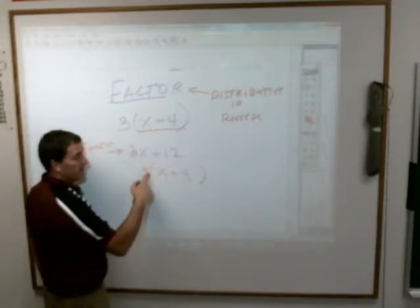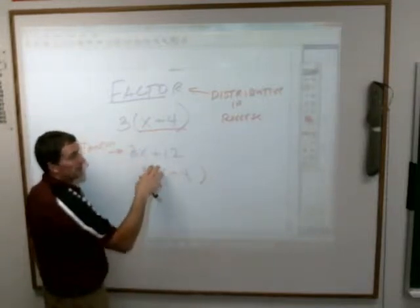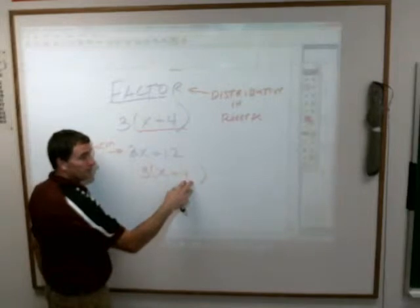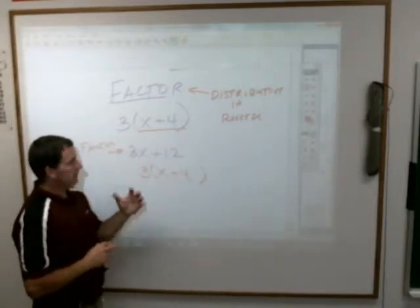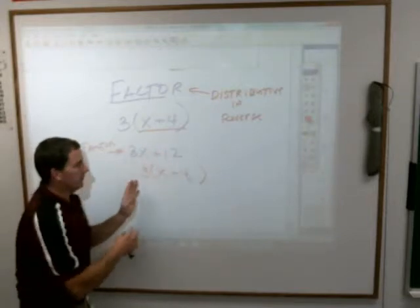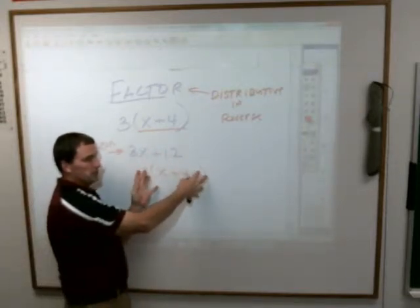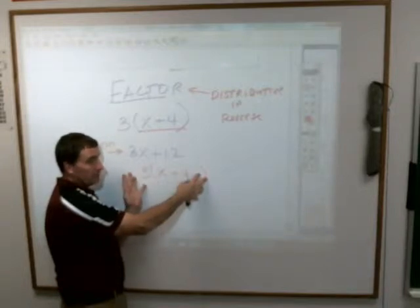Because I divide 3x by a 3, the 3 goes away, I'm left with just an x. I divide 12 by the 3, I'm left with the 4. It is the reverse of distributive property. You are dividing out the same number from both of them and then putting a parenthesis there to show that that's the reverse distributive property.